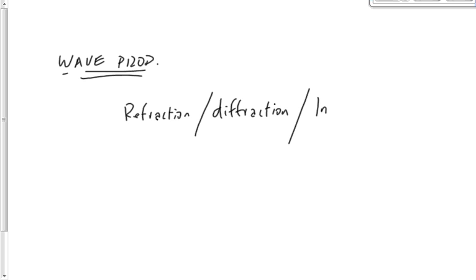The third property is interference. When a crest hits a crest you get a bigger crest, and when a crest hits a trough they cancel out — constructive or destructive interference. Light undergoes interference just like waves do, so light must be a wave.